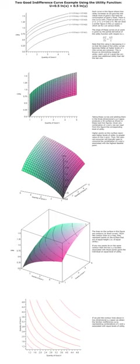Thus, the ratio of marginal utilities gives the absolute value of the slope of the indifference curve at point (x₀, y₀).